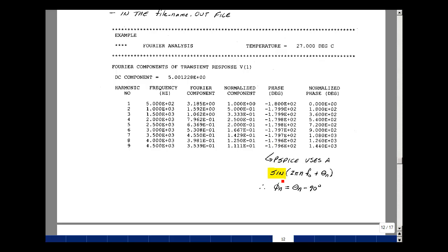Now PSPICE is actually using a sine wave of 2πnf₀ plus θ, and this is what's shown over here. We're doing in terms of a cosine, so I have to phase shift this, in other words move the waveform to the left a quarter cycle. So our φ_n is θ_n minus 90 degrees. If we take the angle here, which is basically minus 180, and subtract 90, you get minus 270, and that's the same as plus 90 degrees.